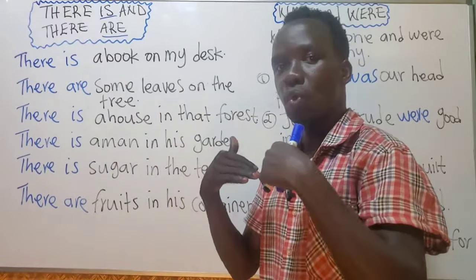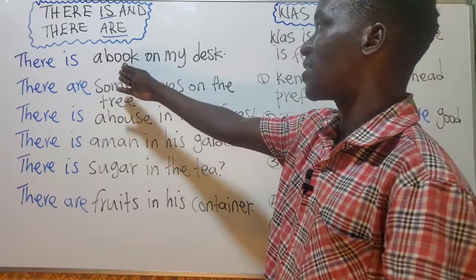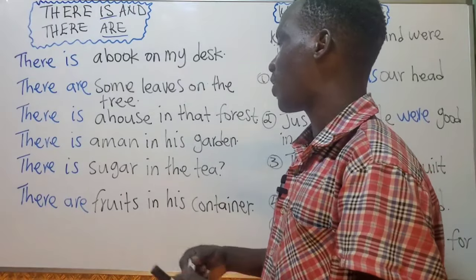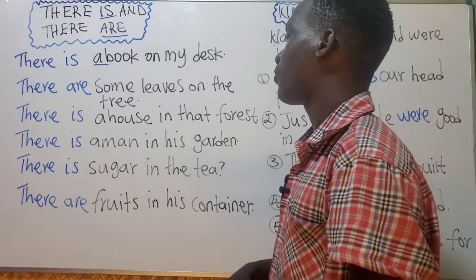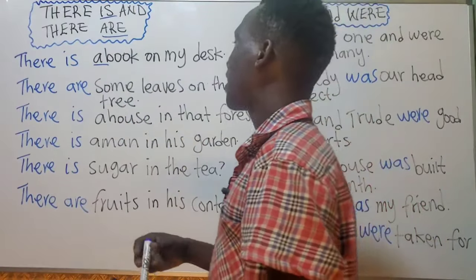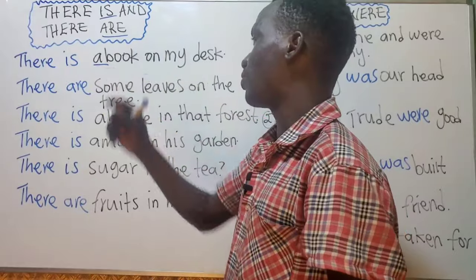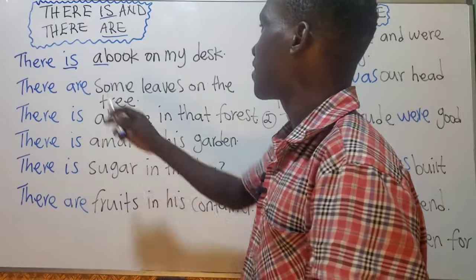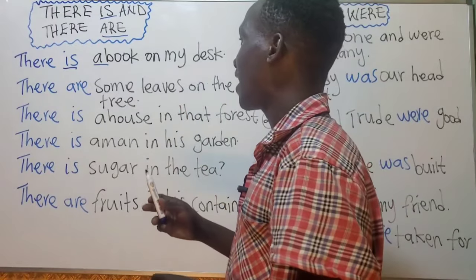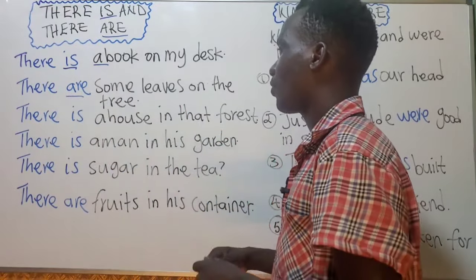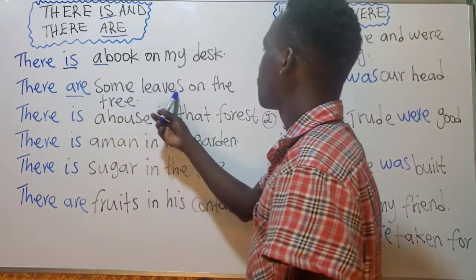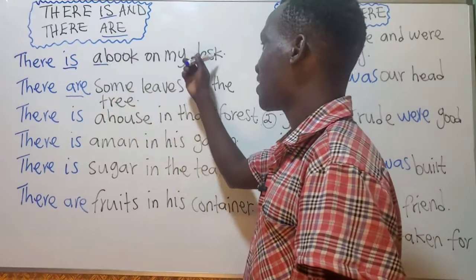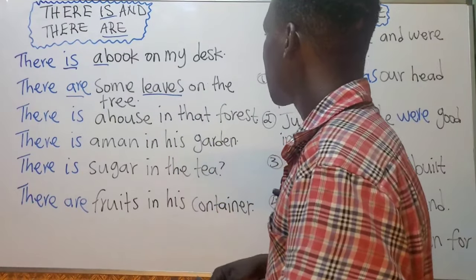Let us look at these examples. 'There is a book on my desk' — because of the article 'a' in front of 'book,' we know it is singular, so it takes 'is': there is a book on my desk. Next, this one is plural: 'There are some leaves on that tree.' Here we are talking about leaves, and leaves are plural, whereas before we were talking about a book on a desk.